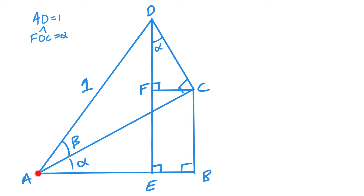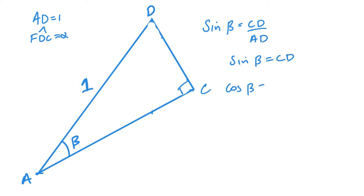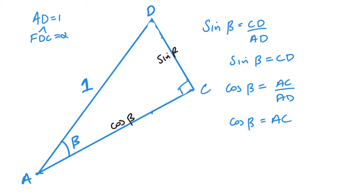Let's look at triangle ACD. From this triangle, I can state that sine beta is opposite over hypotenuse, so CD over AD. And since we know that AD is 1, I can say that sine beta is equal to CD. Now cos beta — cos is adjacent over hypotenuse — so that's AC over AD. And again, as AD is 1, I can say that cos beta is equal to AC. So AC is cos beta and CD is sine beta in terms of length.